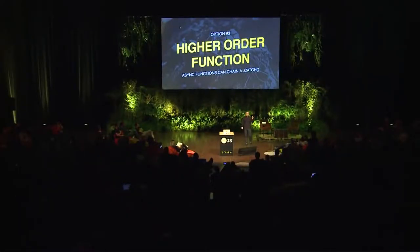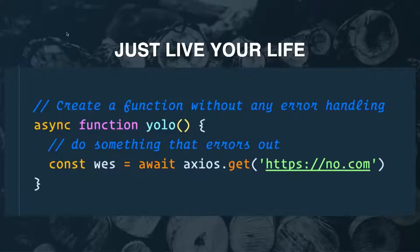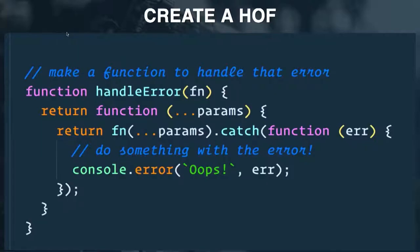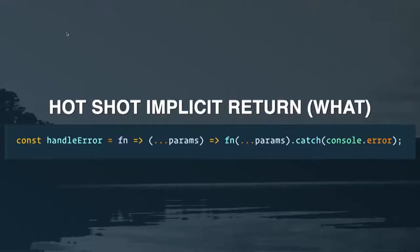Another option is a higher-order function, which is kind of cool because you can chain a dot-catch on async functions. Let's walk through an example: I've got a function called YOLO where I don't care about error handling — I assume everything works great — then I await something that maybe gives me a 404. You create a higher-order function called handleError that takes the actual function as an argument, and from that you return a new function — the same function but with a catch tagged on to the end, where you actually handle your error.